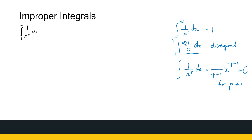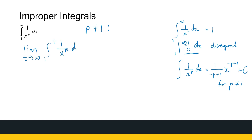We already know that when p is equal to 1, that integral is divergent. So we're going to look at p values not equal to 1 and see what happens. We're going to look at the limit as t approaches infinity of the integral from 1 to t of 1 over x to the power p dx.